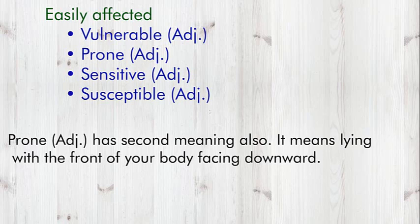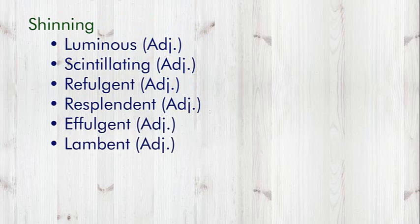Next word group is Shining. Words used for shining are Luminous (Adjective), Scintillating (Adjective), Refulgent (Adjective), Resplendent (Adjective), Effulgent (Adjective), and Lambent (Adjective). Lambent (Adjective) means softly shining.